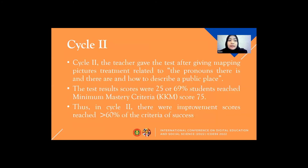Cycle two. In cycle two, the teacher gave the test after providing a mapping picture treatment related to pronouns — there is and there are — and how to describe a public place. The test results showed that 25 or 69% of students reached the minimum mastery criteria KKM score 75. Thus, in cycle two, improvement scores reached more than 60% of the criteria of success.